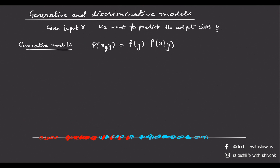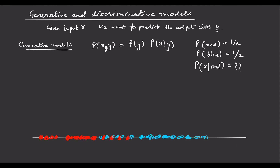Let's say we have an equal number of red and blue points, so probability of red is 0.5 and probability of blue is 0.5. For probability of x given red, we only look at the red points and assume the distribution of x is a normally distributed random variable given y. We can see that the mean of the red x points will lie somewhere around here, and if it's normally distributed, it will look something like this.